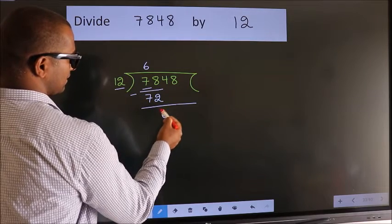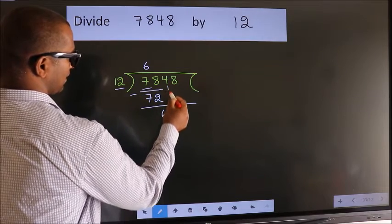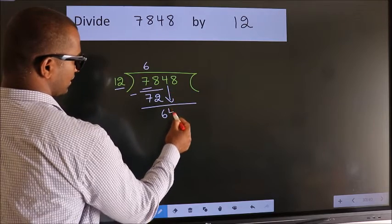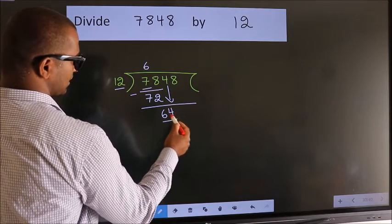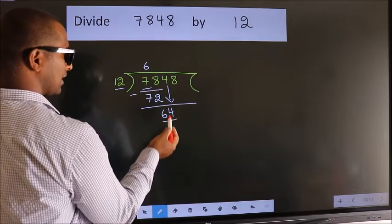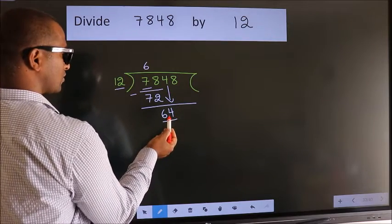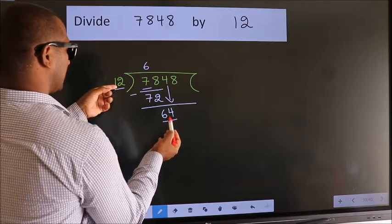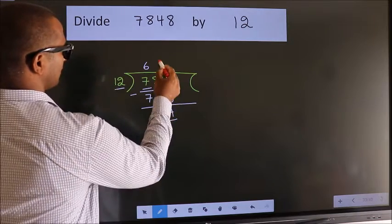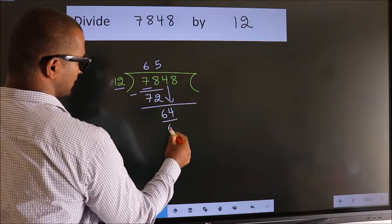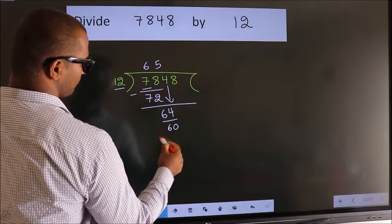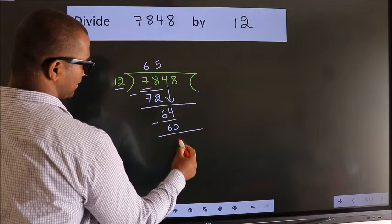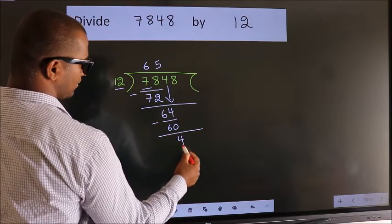After this, bring down the beside number. So 4 comes down, giving us 64. A number close to 64 in the 12 times table is 12 fives, which is 60. Now we subtract and we get 4.